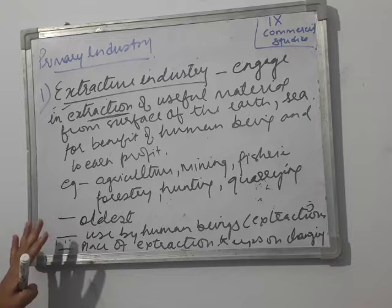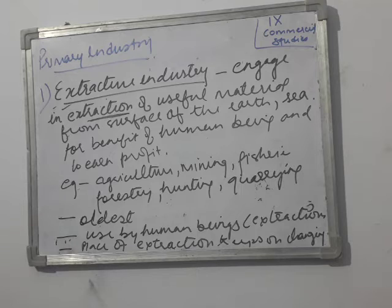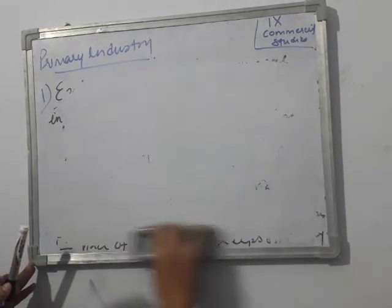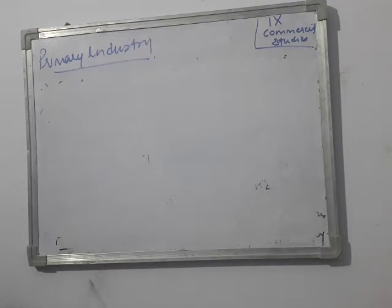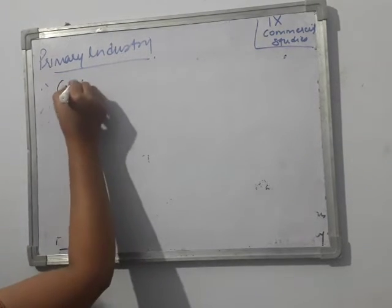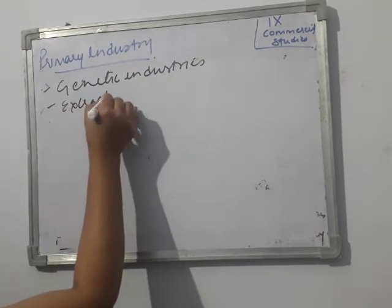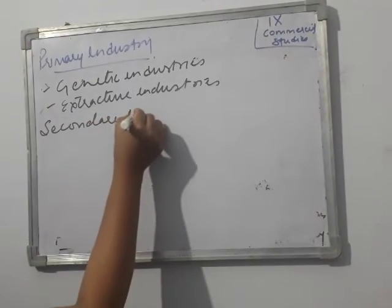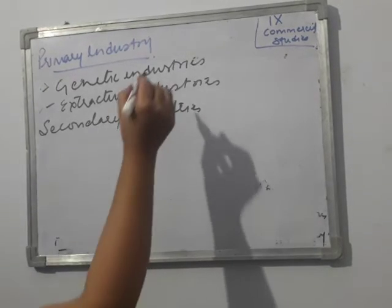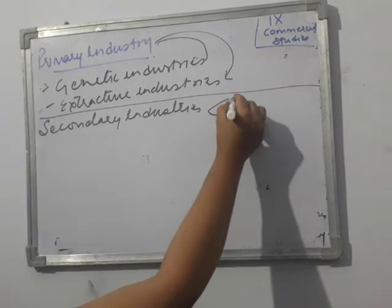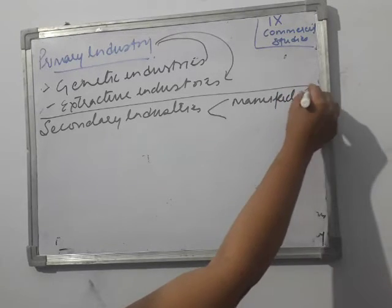Under primary industries we have done genetic industry and extractive industries. Now we will do secondary industries. Secondary industries are divided into two parts: first is manufacturing and second is construction.